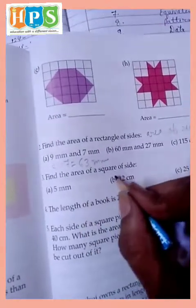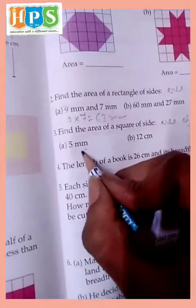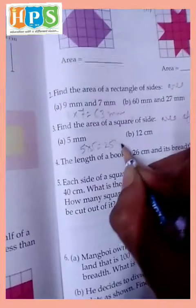Find the area of square of side. Area of square, area of square is equal to side multiply side, so 5 multiply 5 is equal to 25 millimeter.